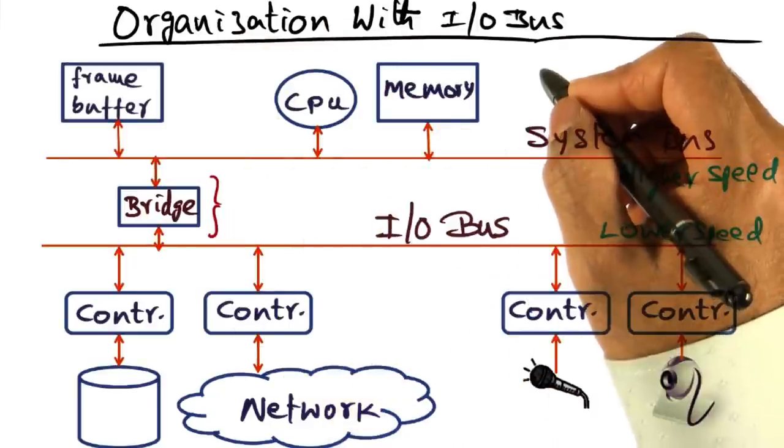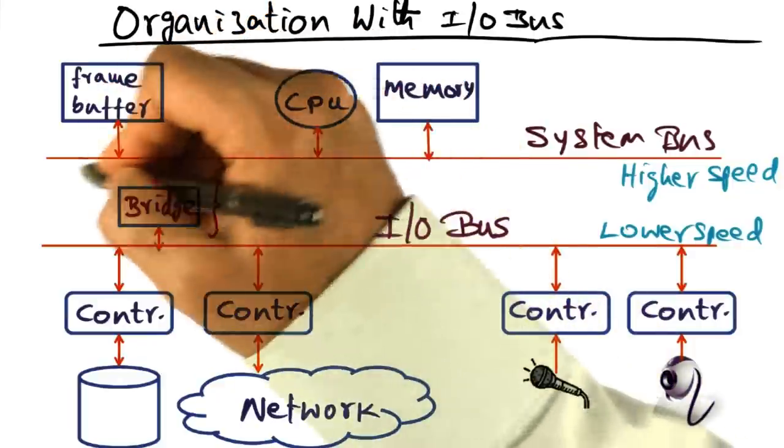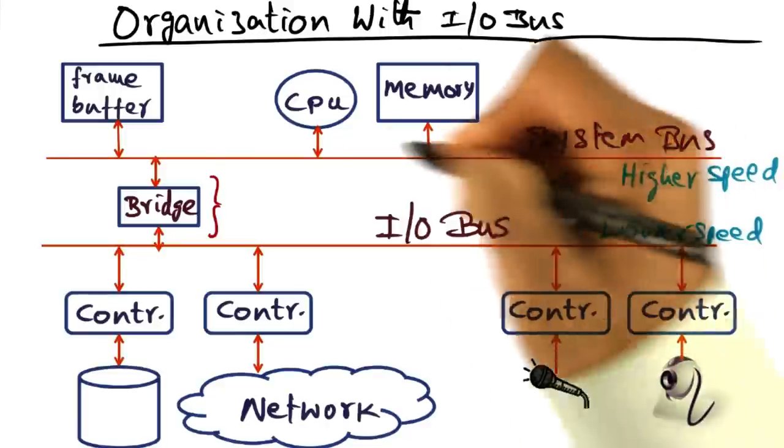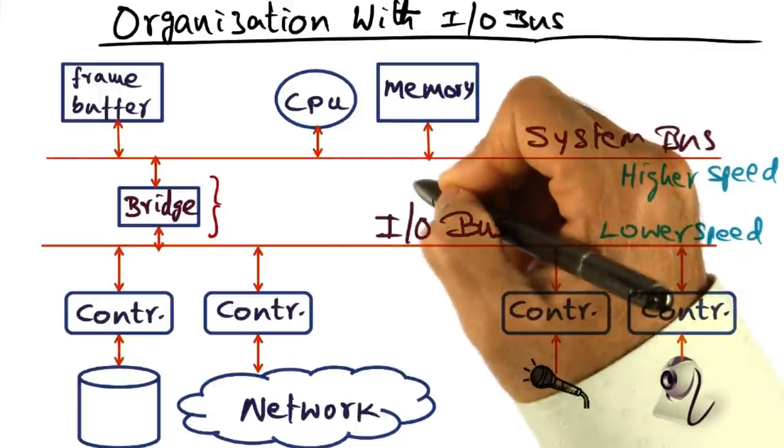There may be other high speed devices, for example, a frame buffer of a graphics display that may also be hanging off of the system bus due to the need for refreshing the screen in a rapid manner from the memory.